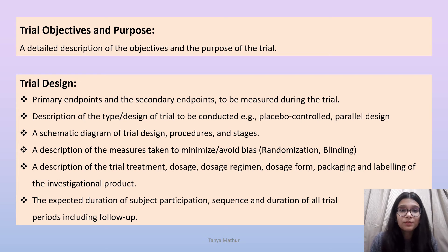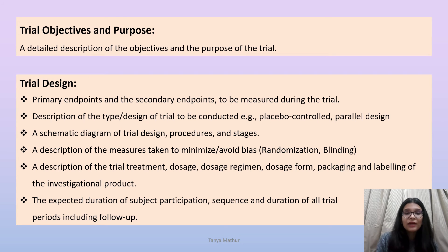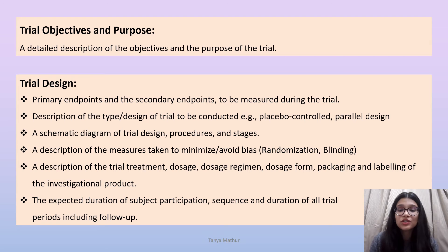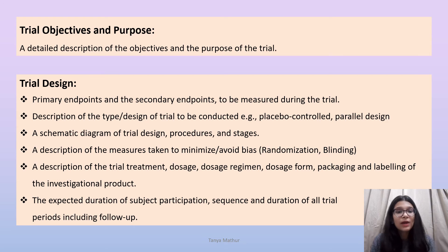The trial objectives and purpose describe why we are conducting this trial — a detailed description of its objectives and purpose should be included. The trial design covers how we are going to design the trial and what various steps or parameters are being considered, including the primary and secondary endpoints to be measured. It also describes the type of design, for example whether it is a placebo-controlled or parallel design, along with a schematic diagram of the trial design, procedures, and stages.